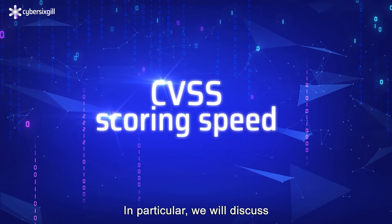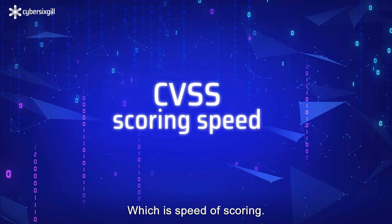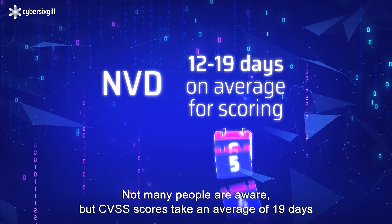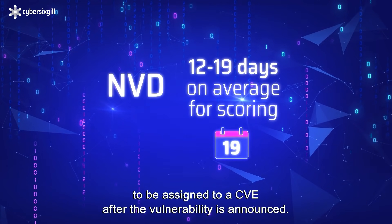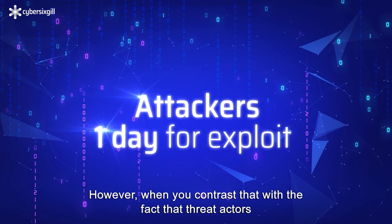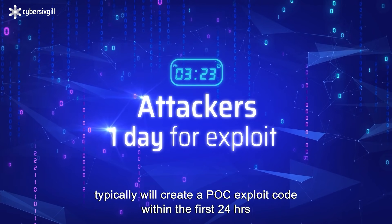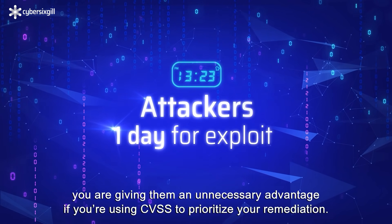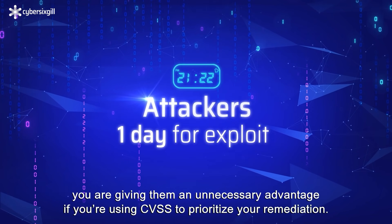In particular, we will discuss one of the often overlooked issues with CVSS, which is speed of scoring. Not many people are aware that CVSS scores take an average of 19 days to be assigned to a CVE after the vulnerability is announced. However, when you contrast that with the fact that threat actors typically will create a POC exploit code within the first 24 hours after a vulnerability has been announced, you are giving them an unnecessary advantage if you are using CVSS to prioritize your remediation.